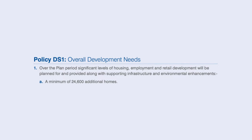In the context of general development and specifically brownfield sites in Coventry, the first policy I would highlight from a local level is DS1. This is a policy relating to overall development needs, and it confirms that a minimum of 24,600 additional homes will be provided between the years 2011 and 2031 by Coventry.